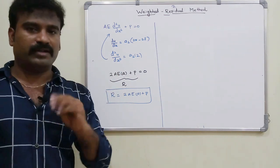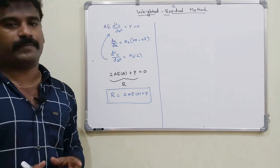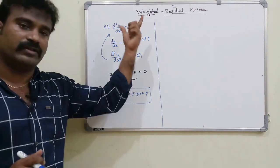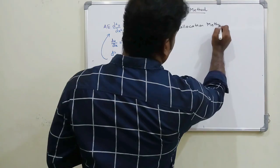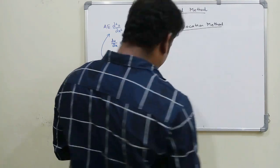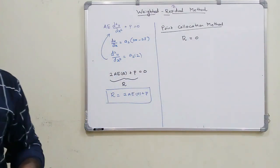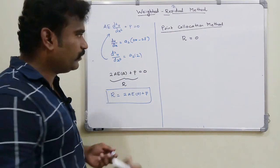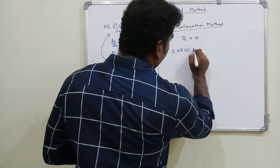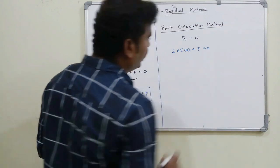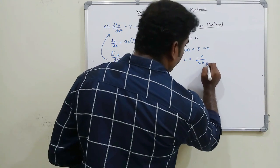There are four methods to solve this: Point Collocation, Subdomain Collocation, Least Squares, and Galerkin. We first solve using the simplest — Point Collocation, where R is set directly to zero. Setting R = 2AEa₂ + p = 0 gives a₂ = −p / (2AE).